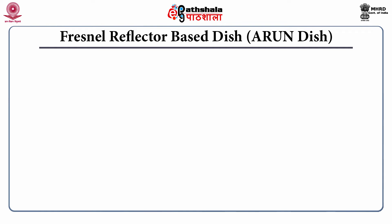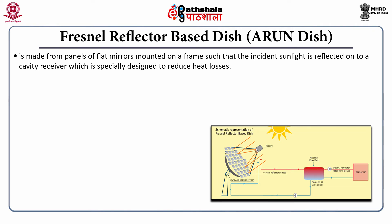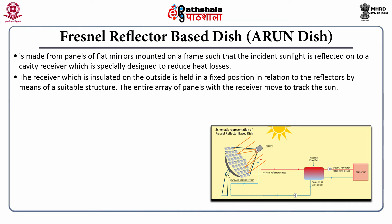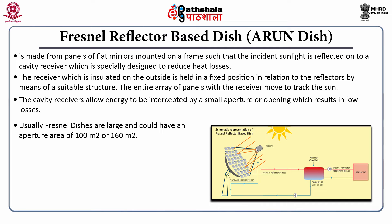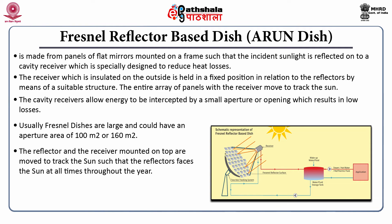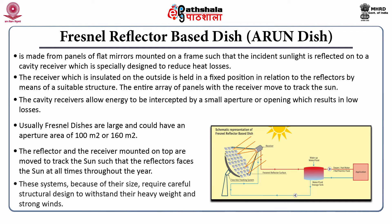The Fresnel reflected-based dish — the Arun dish — is made from panels of flat mirrors mounted on a frame reflecting incident sunlight onto a cavity receiver specially designed to reduce heat losses. The receiver is insulated on the outside and held in a fixed position relative to the reflectors. The entire panel array with receiver moves to track the sun. These Fresnel dishes are large, with an aperture area of 100 to 160 m², and require careful structural design to withstand heavy weight and strong winds.